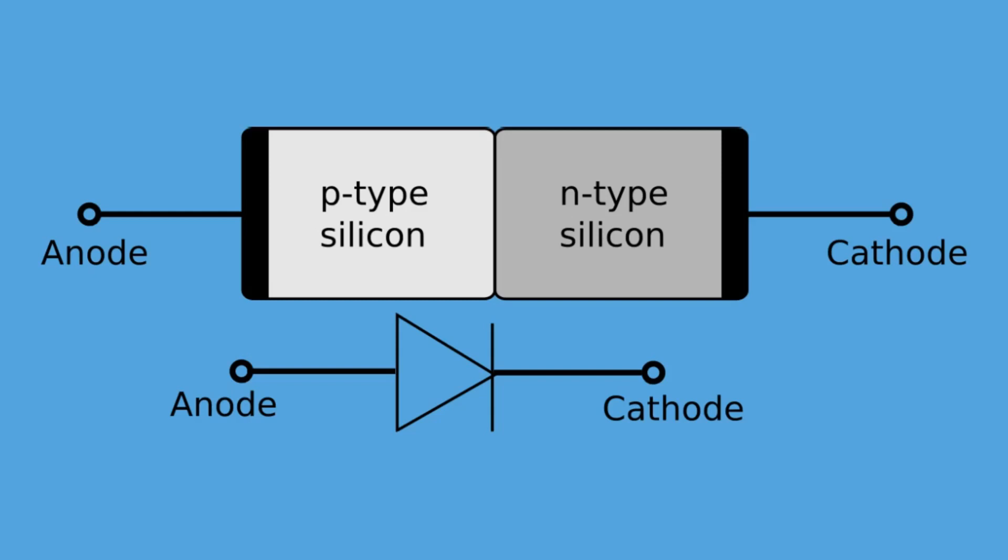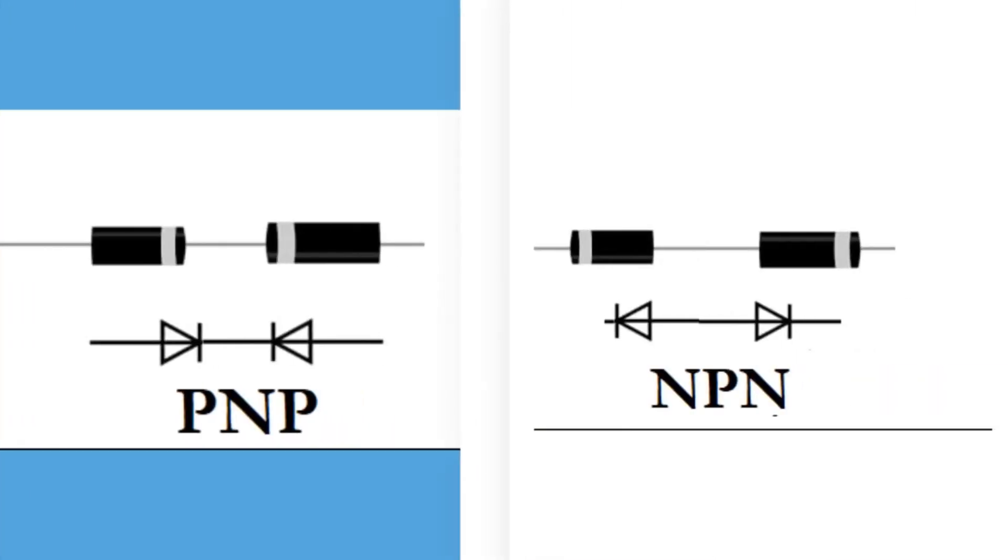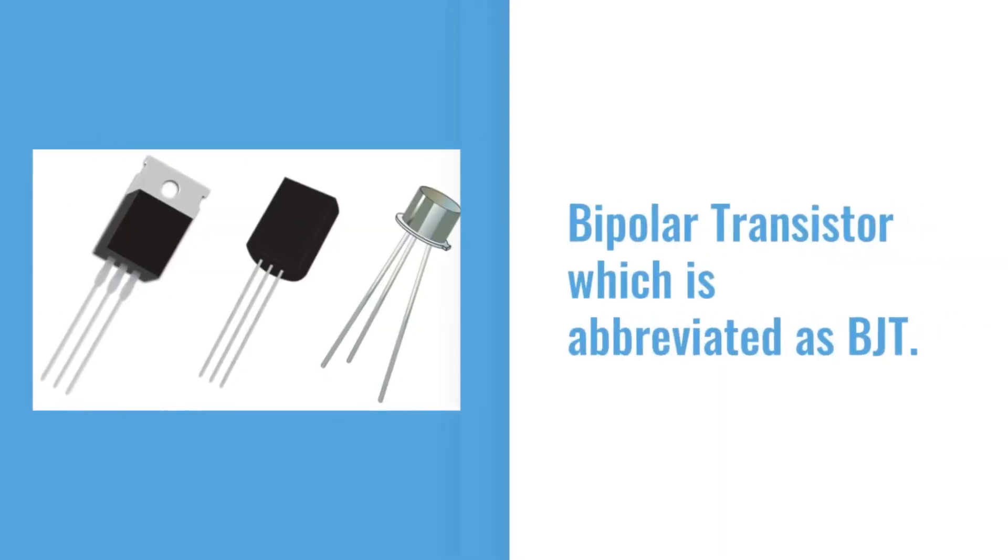Now if we join together two individual diodes back to back, this will give us two p-n junctions connected together in series that share a common P or N terminal. The fusion of these two diodes produces a three-layer, PNP or NPN, three-terminal device forming the basis of a bipolar transistor which is abbreviated as BJT.